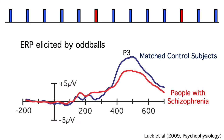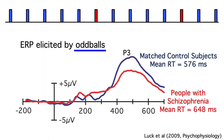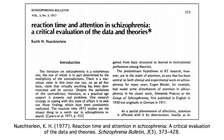That's where ERPs come in. Many studies have used oddball paradigms to look at the P3 wave in schizophrenia. The data shown here are pretty representative. Most studies focus on the ERPs elicited by the oddballs, and they find a reduced amplitude in people with schizophrenia compared to matched control subjects. Most of these oddball studies didn't look at response times, but we did. We found that people with schizophrenia were about 70 milliseconds slower than controls to respond to the oddballs, on average. This is actually consistent with tons of previous behavioral studies going back several decades. In almost any behavioral paradigm, response times are slowed in people with schizophrenia.